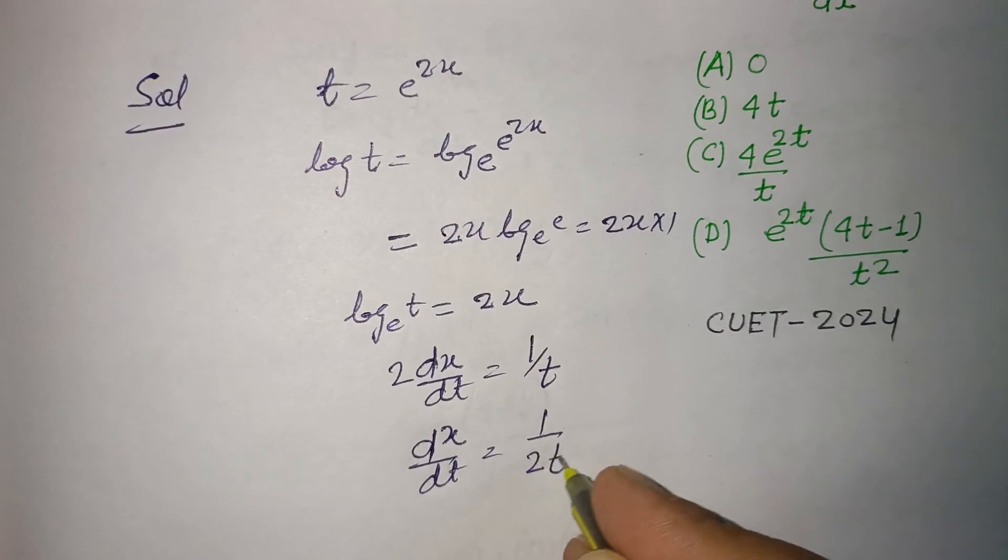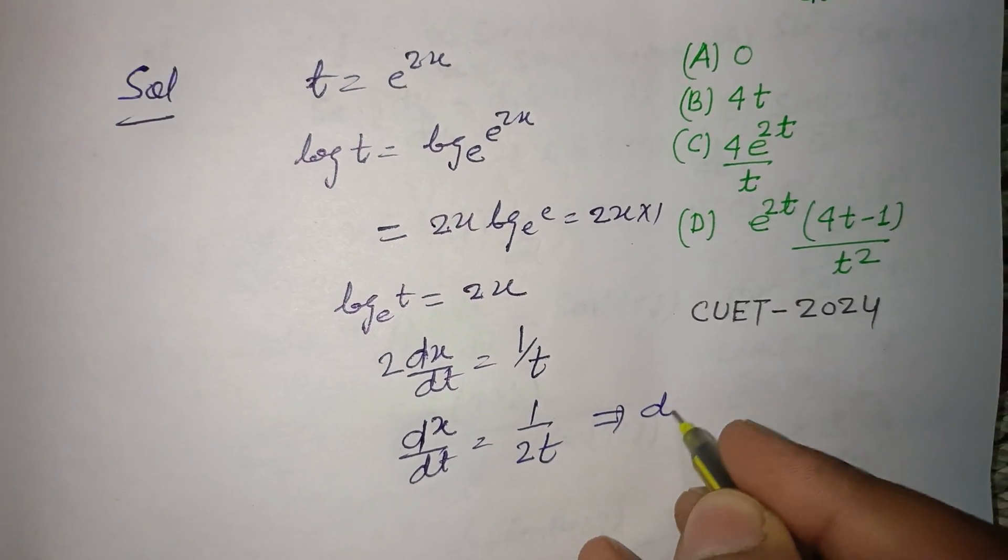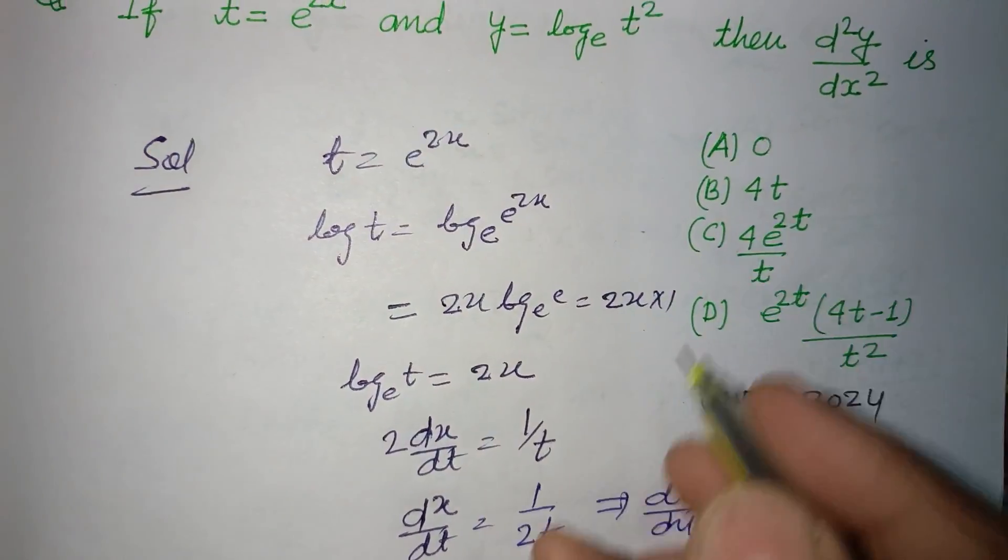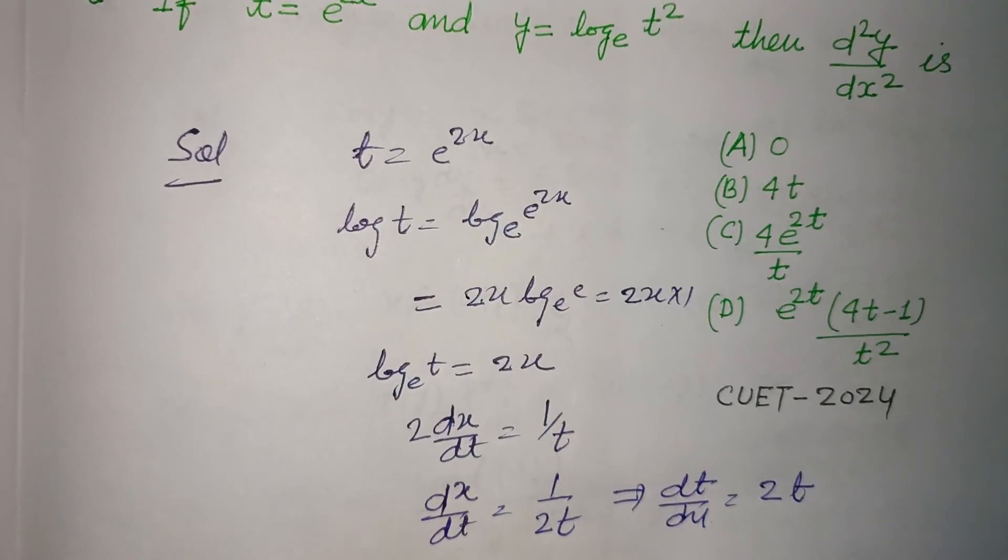1 upon 2t, or dt over dx equals 2t. And it is given that y equals log